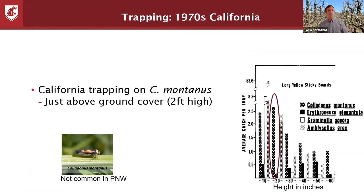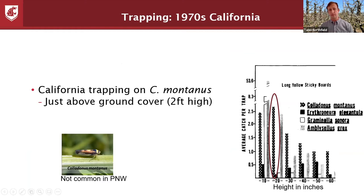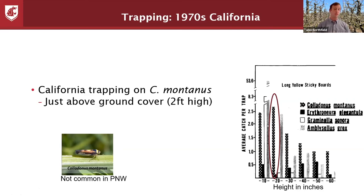In California in the 1970s, Sandy Purcell looked at trap catches below five feet high. The polka-dotted leafhopper, Cholodonus montanus, was the subject. He found the highest capture at around 20 inches, some at 10 inches, and catches up to 60 inches. In California, orchards often had more bare ground, so trap height relative to ground cover may differ. If ground cover is above the traps, leafhoppers won't see them, so you want traps at least a little bit above the ground cover.